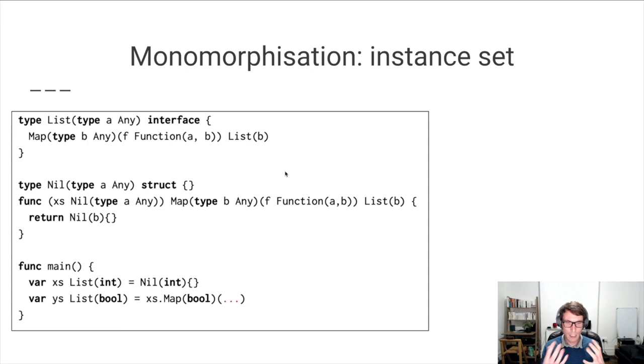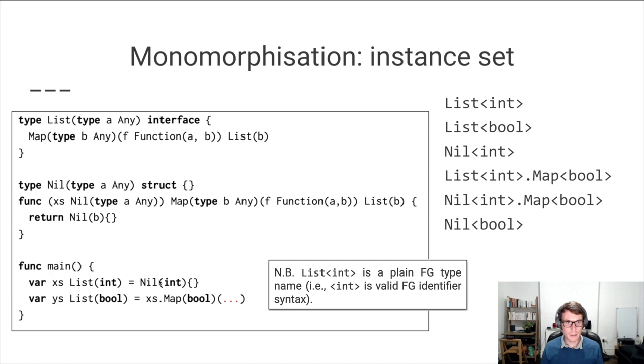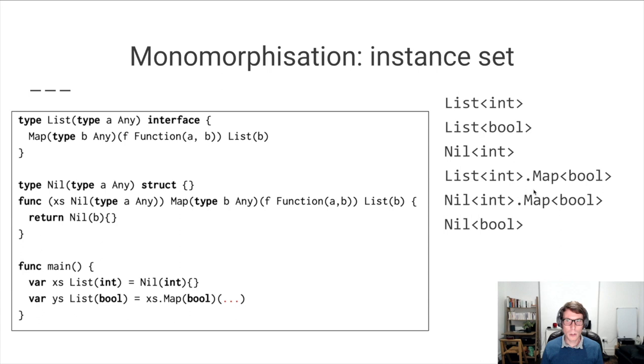So if we analyze this program, we notice quite easily that we need list of int, list of bool, and nil of int. We also observe that we need map2bool that is defined on list of int. These four instances are fairly straightforward to compute. What is a bit less straightforward is to notice that we also need to define map2bool for nil of int. This is because nil of int is a subtype and implementation of list of int. Going through the body of this method, instantiated with B is bool, we will need to create also nil of bool.